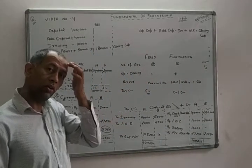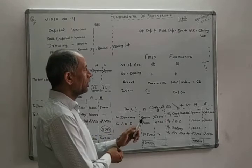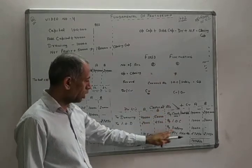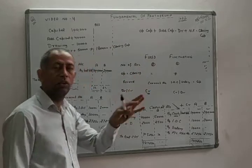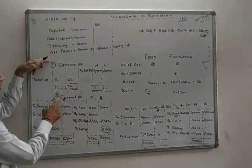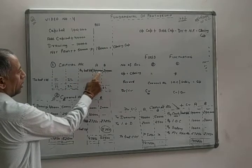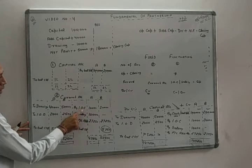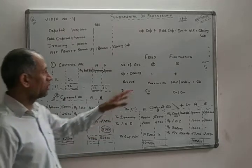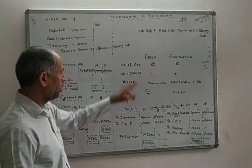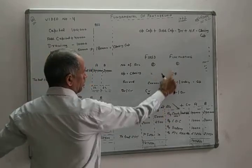Good morning friends. In the last video we discussed the difference between fixed and fluctuating capital. When partner capital is fluctuating, we prepare only one account and record all transactions in the capital account. When partners decide their capital remains fixed, we prepare two accounts: one capital account and one current account.